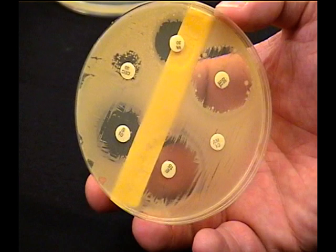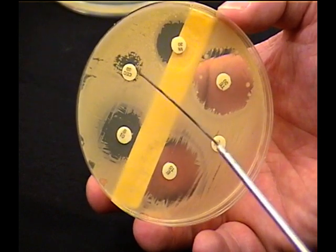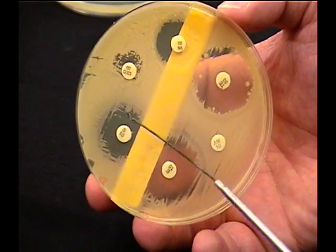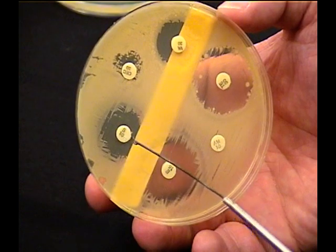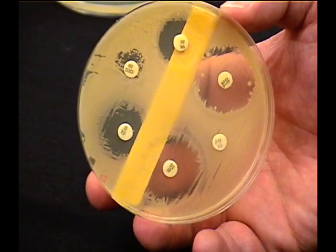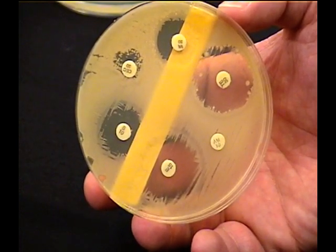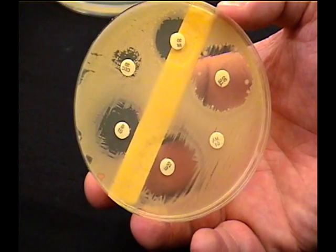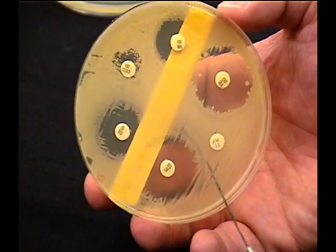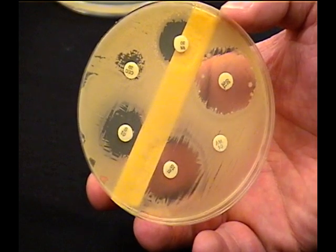As we go around, you can see slightly bigger areas, clear areas around the outside. The clear areas are zones of inhibition, as they're called. One would think that the bigger it is, the better it is. Well, not necessarily.